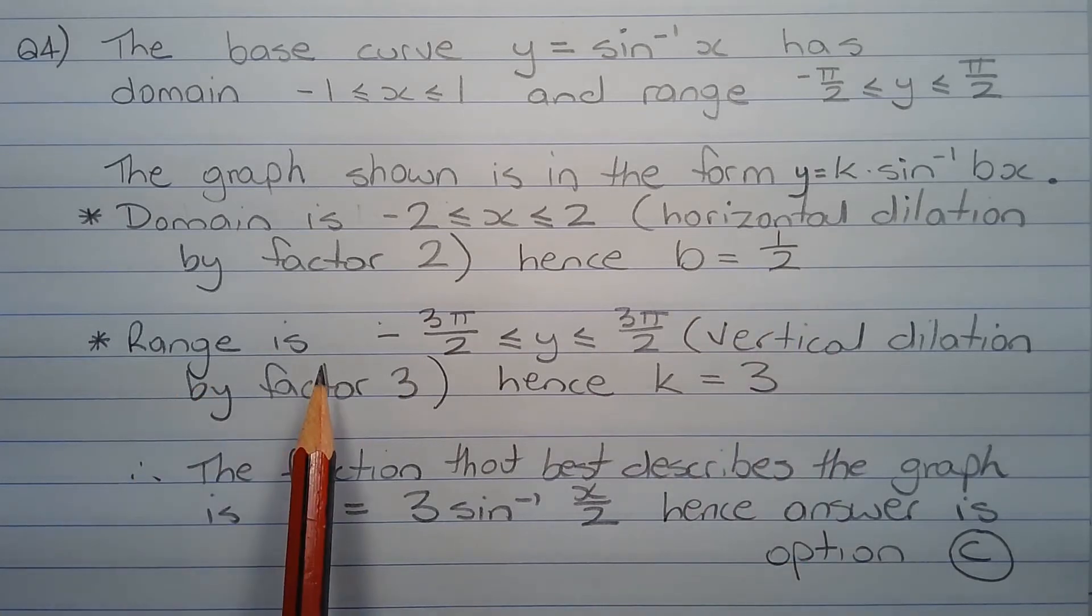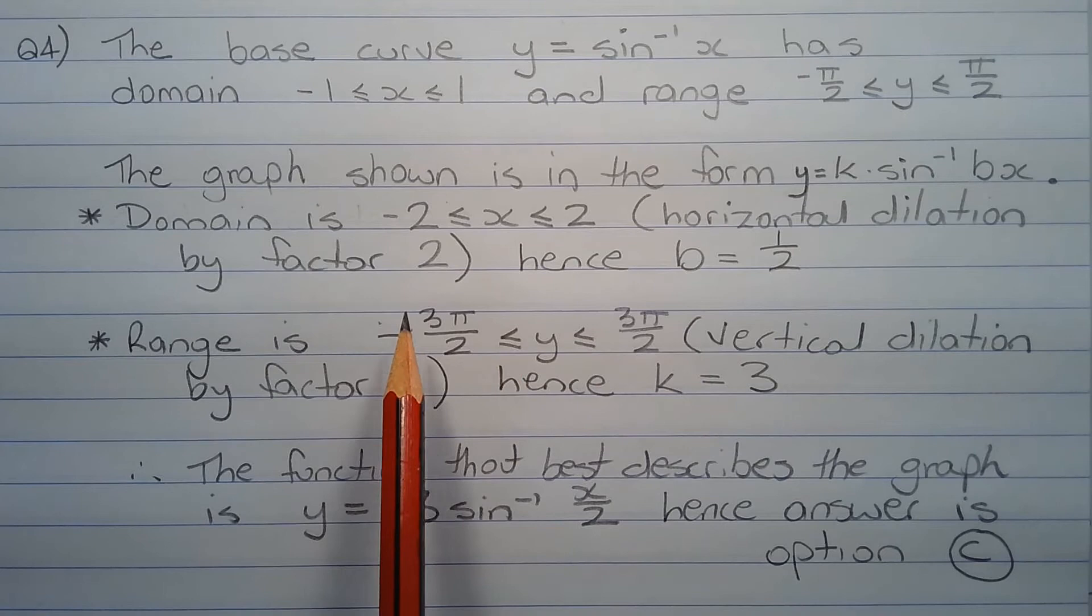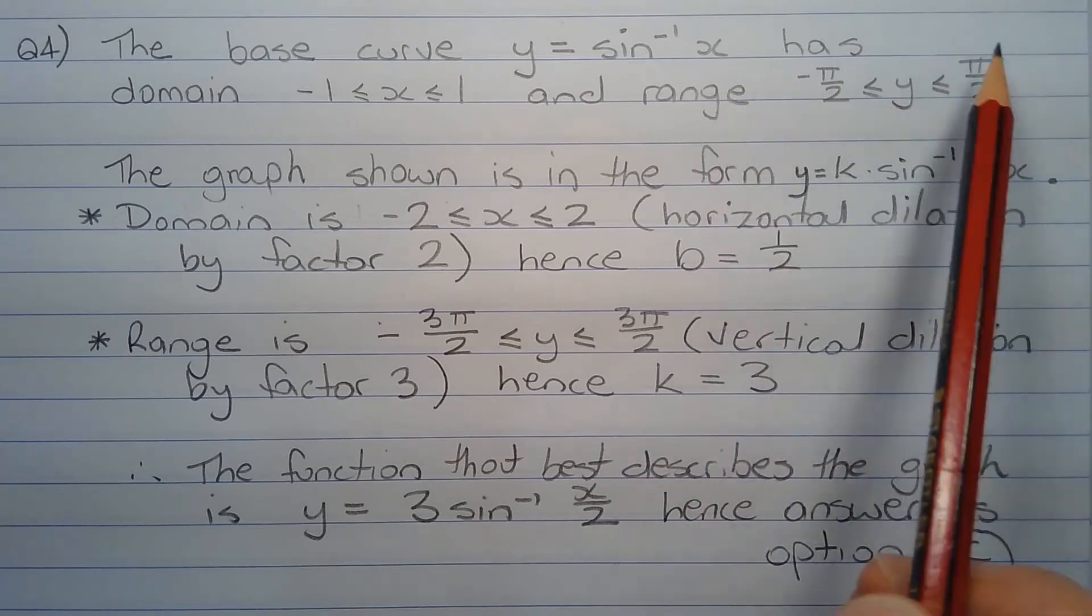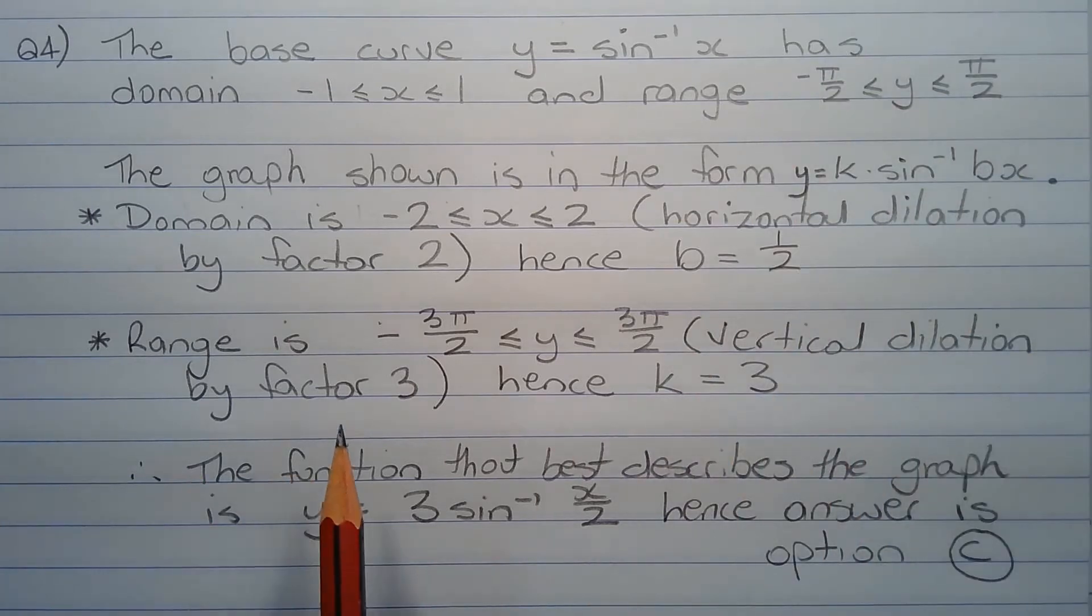The range is negative 3 pi over 2 less than or equal to y less than or equal to 3 pi over 2, which is triple the range of the base curve. This is a vertical dilation by factor 3, hence k is equal to 3.